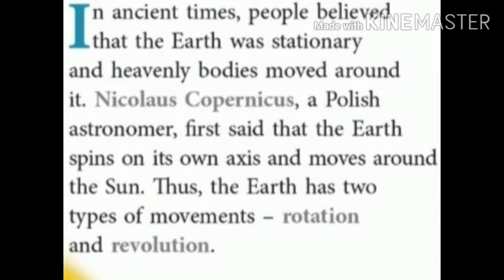In ancient times, people believed that the Earth was stationary and heavenly bodies moved around it. But Nicholas Copernicus, a Polish astronomer, first said that the Earth spins on its own axis and moves around the Sun. Thus, the Earth has two types of movements: Rotation and Revolution.